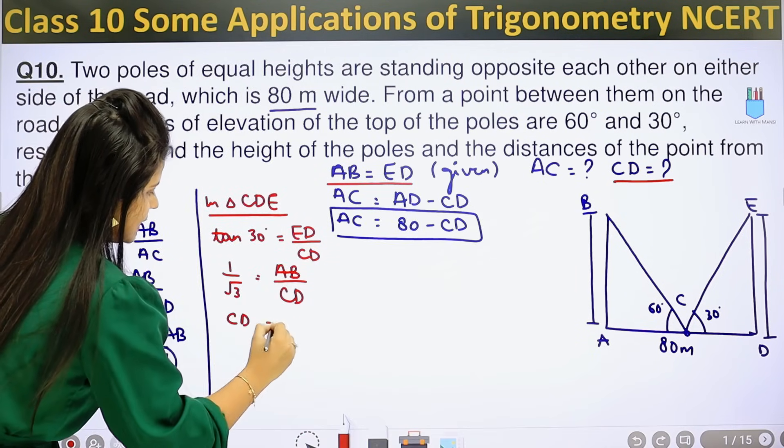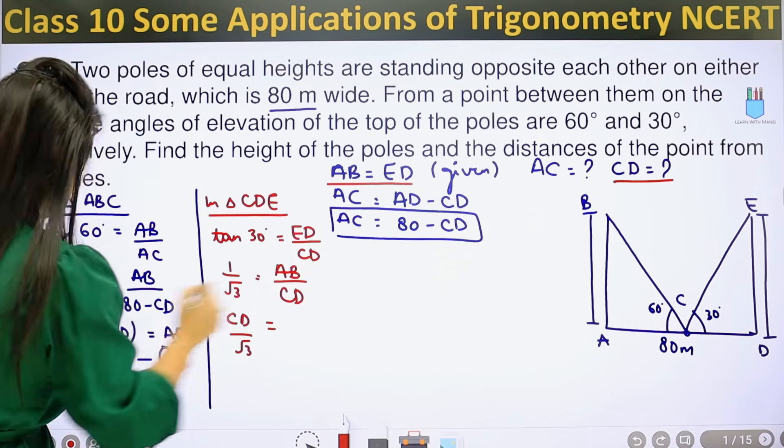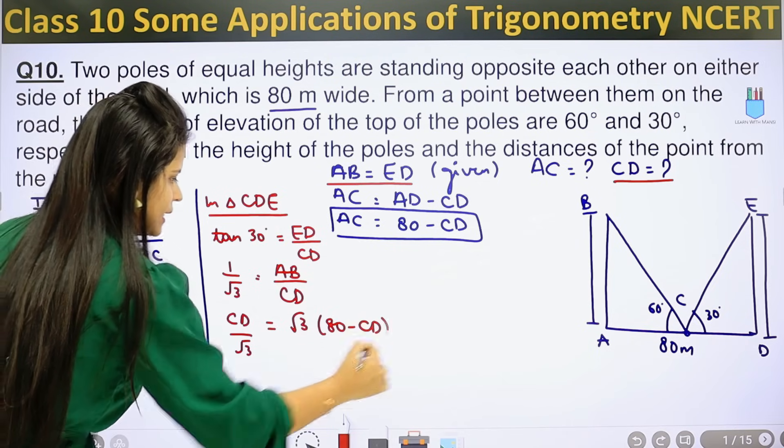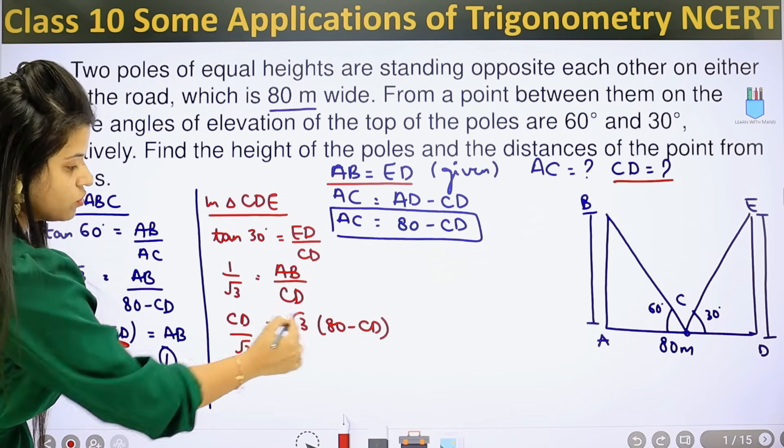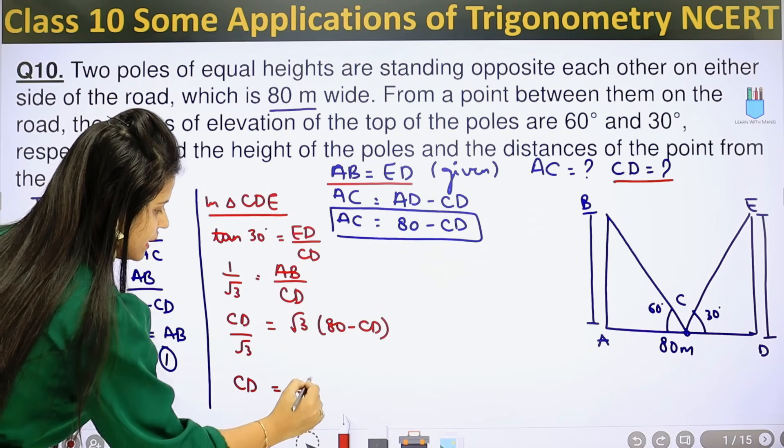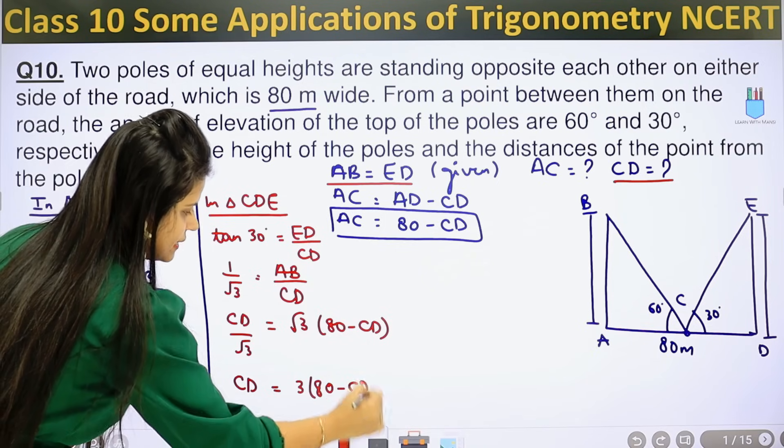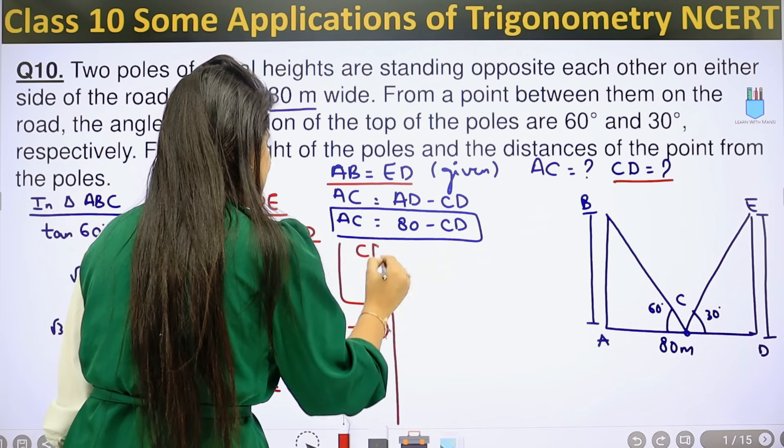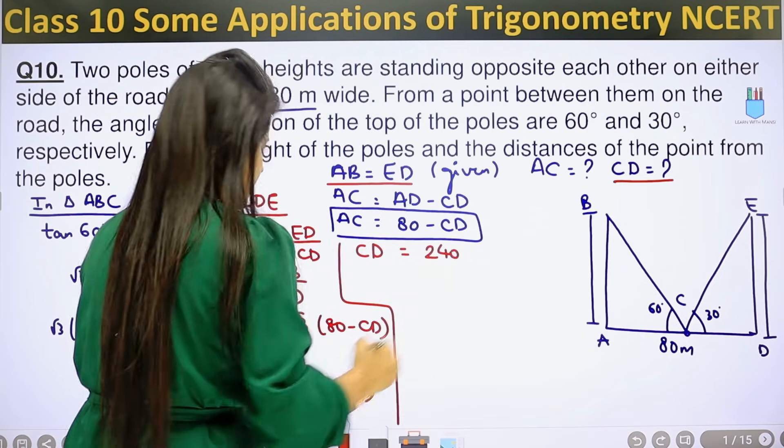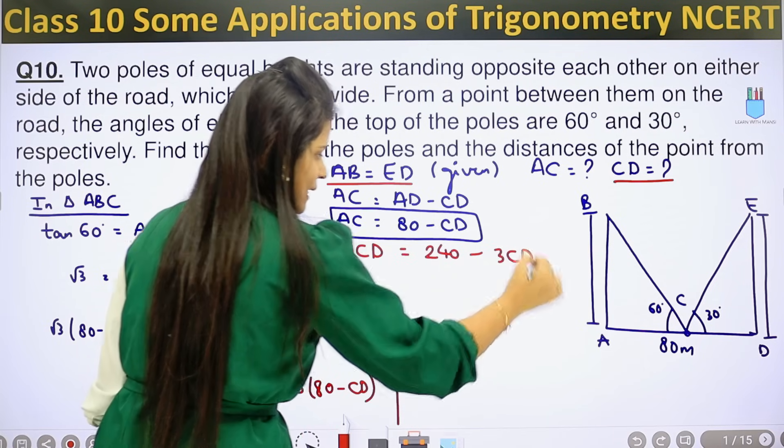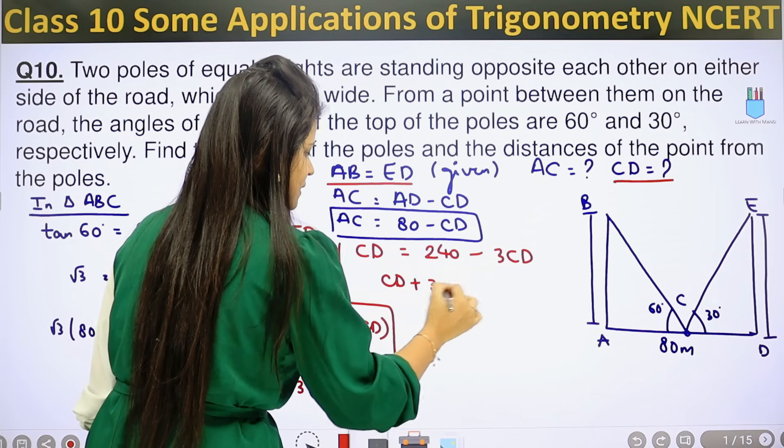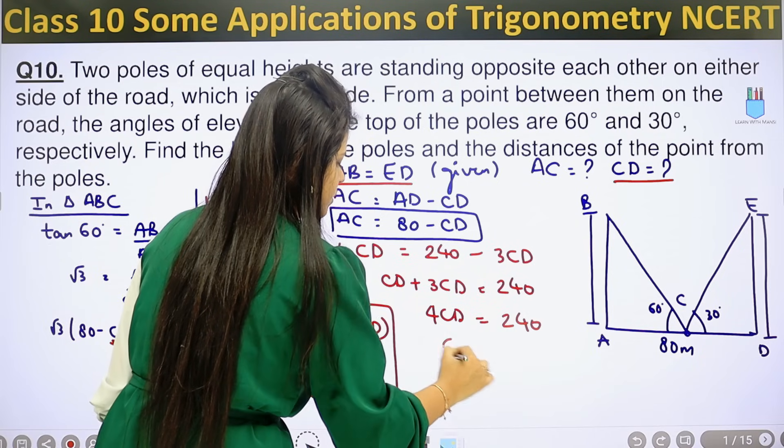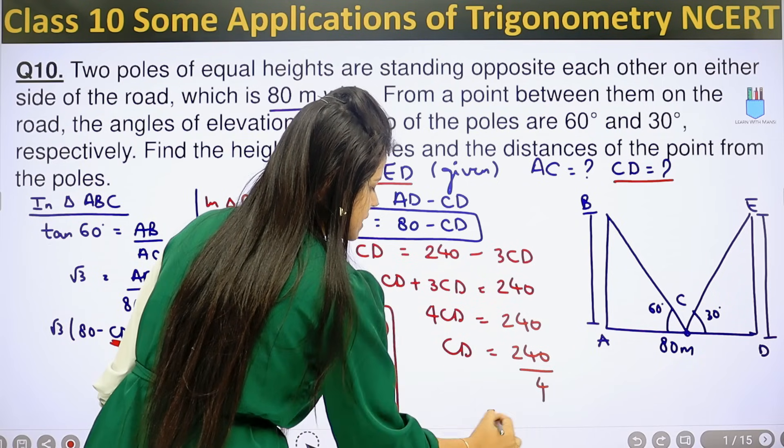So 1 upon root 3 equals AB upon CD. I'll send CD to the top. This becomes CD equals AB upon root 3. Now I'll put the AB value: root 3 times 80 minus CD. Root 3 times root 3 is 3. So CD equals 3 into 80 minus CD. This becomes CD equals 240 minus 3CD. Send CD over: CD plus 3CD equals 240. This becomes 4CD equals 240. And this will be CD equals 240 upon 4, which is 60.